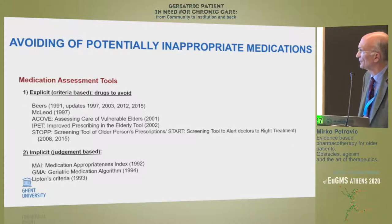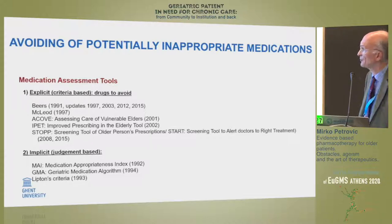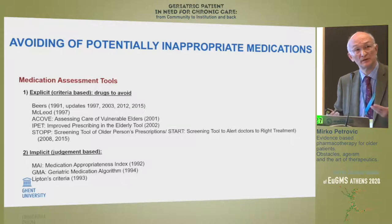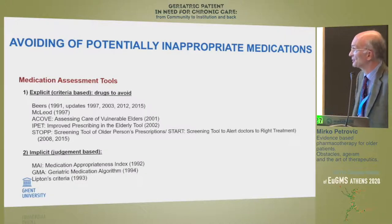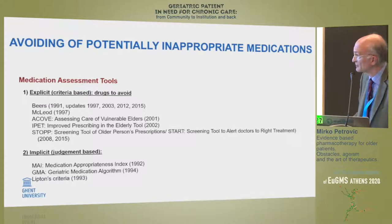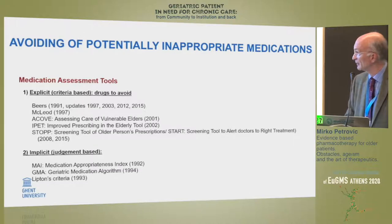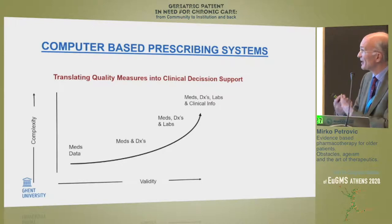From the first group I would underline two tools: the Beers criteria from the US, invented in the early 1990s and updated several times, and its European counterpart from Ireland, from the University of Cork and the group of Dennis O'Mahony — the so-called STOPP/START criteria. The acronym is very well chosen: STOPP refers to medications that should be avoided in certain circumstances. Among implicit instruments, I would draw your attention to the Medication Appropriateness Index, invented by Hanlon in the early 1990s.